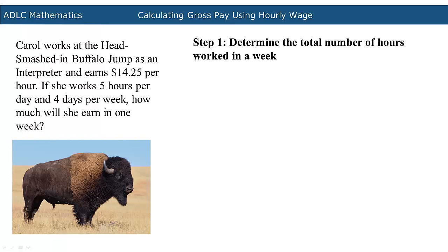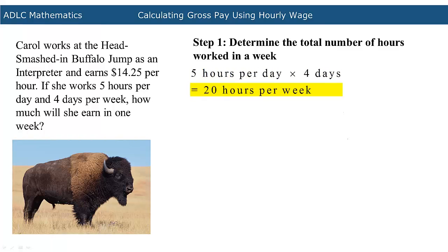The first step in calculating gross pay is to determine the total number of hours that were worked in a week. We know that Carol worked 5 hours per day for 4 days. The total number of hours worked in a week can be determined by multiplying the number of hours worked per day by the number of days worked per week, which means that Carol worked 20 hours per week.